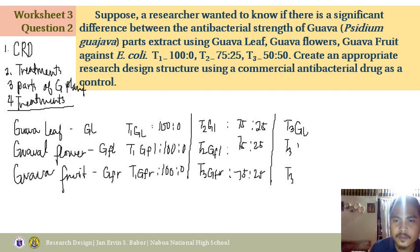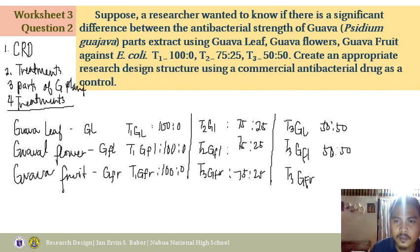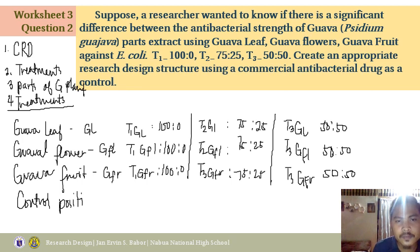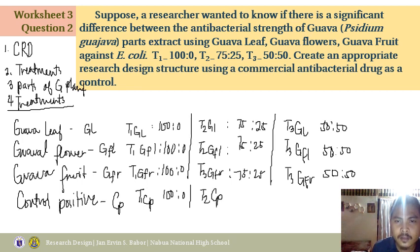T3 includes GL, GFL, and GFR, all at 50:50. There is also a missing treatment — the control antibacterial drug. We write this as positive control (CP). So T1 CP is 100:0, T2 CP is 75:25, and T3 CP is 50:50. That completes the treatment list.